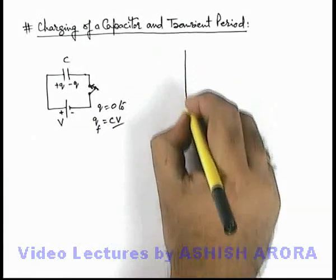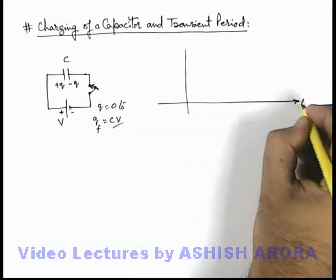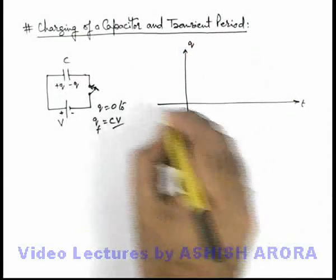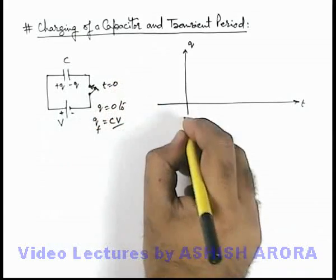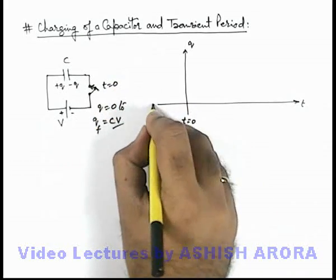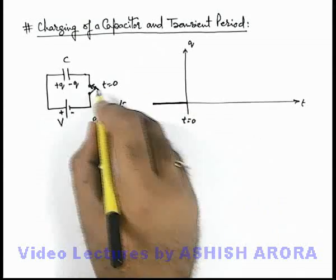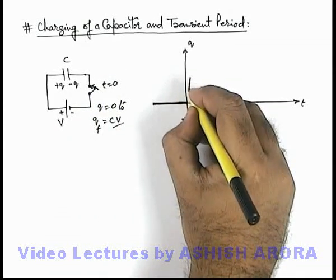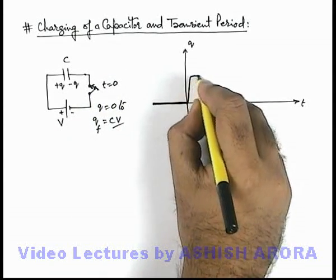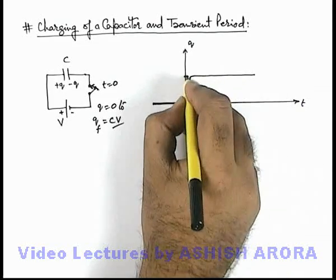If we plot a variation curve of charge on capacitor with time, if the switch was closed at t = 0, then up to t = 0 the charge on capacitor was zero. As soon as the switch is closed, in negligible time the charge rises up to the value CV.